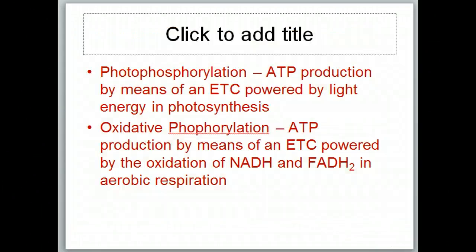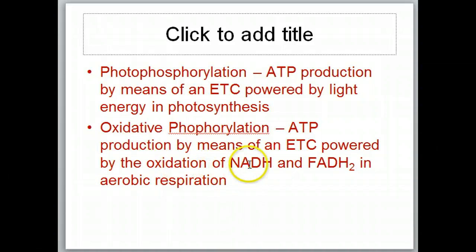Associated with photosynthesis, we have the term photophosphorylation. That is where ATP production by means of an electron transport chain is powered by light energy, instead of what we had in respiration. In respiration, we had oxidative phosphorylation, where ATPs were produced by means of an electron transport chain powered by the oxidation of NADH and FADH.